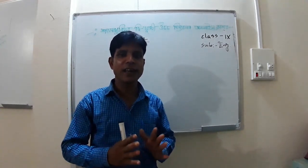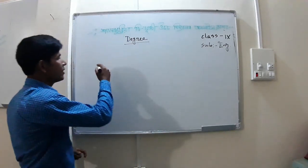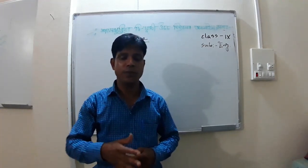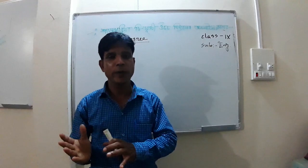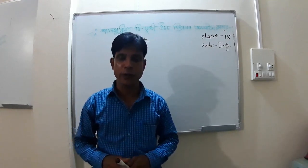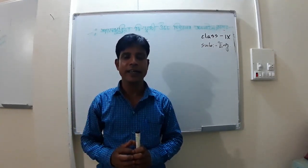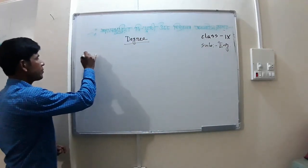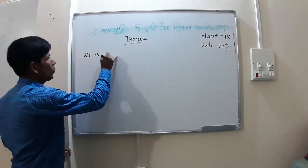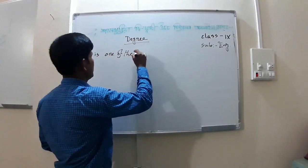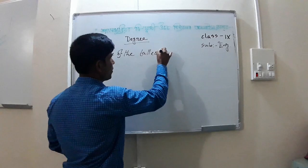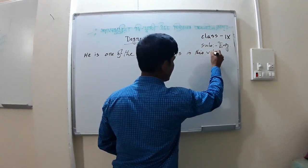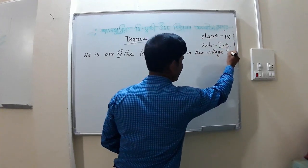Today we will learn another rule. Let's get started. When you have a superlative degree and want to convert it to positive, look at this example: 'He is one of the tallest boys in this village.' The superlative here is 'tallest' — t-a-double-l-e-s-t — and the noun 'boys' is in plural form, and 'village' — v-i-l-l-a-g-e.